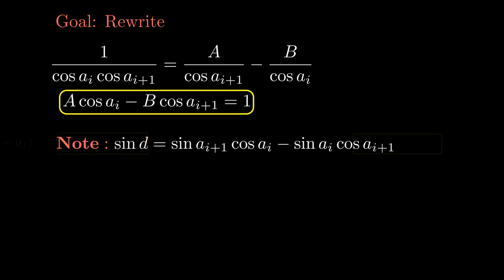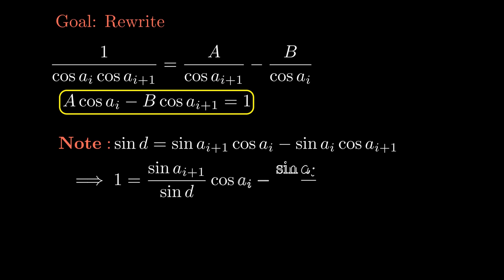As this sequence is an arithmetic progression, we can divide both sides by sine d and we'll end up with 1 being equal to sine aᵢ₊₁ over sine d times cosine aᵢ minus sine aᵢ over sine d times cosine aᵢ₊₁.